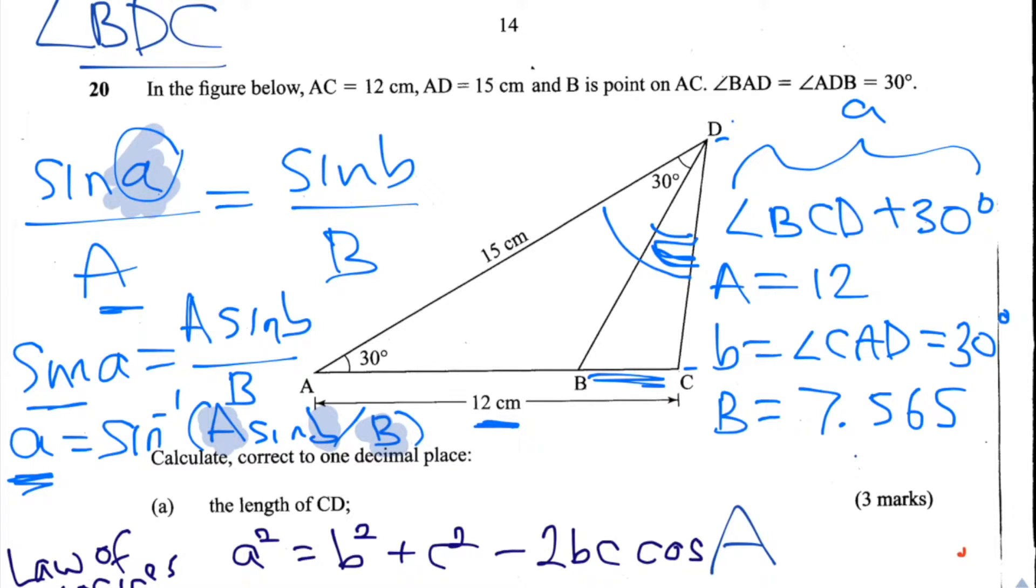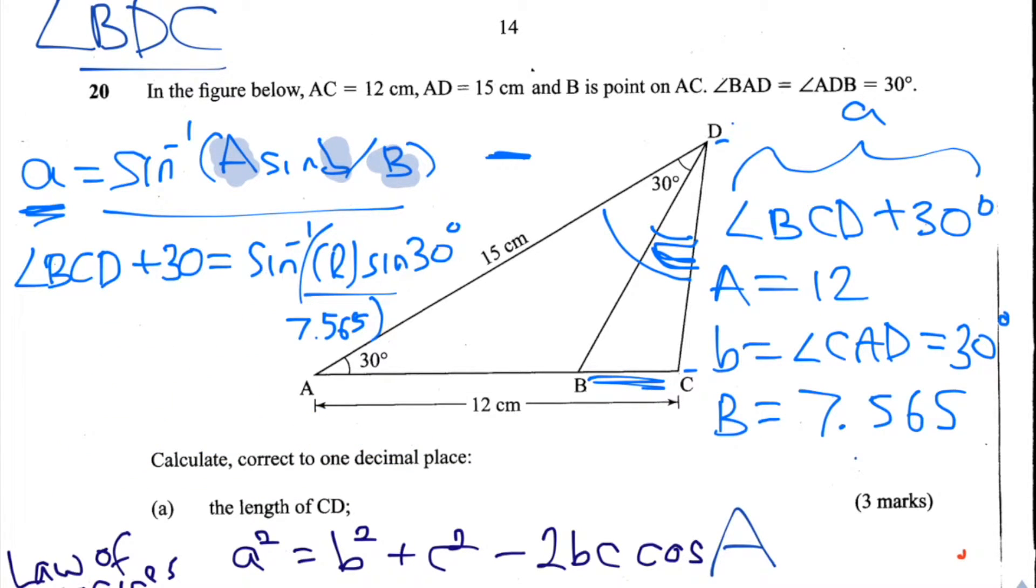So let's plug our values of A, big A, B, and big B into this equation. We have the angle BCD plus 30 degrees is equal to arc sine, and then all in brackets, 12 times by sine 30, divided by 7.565.